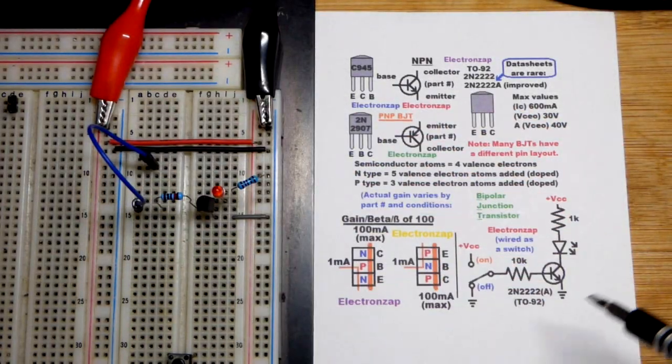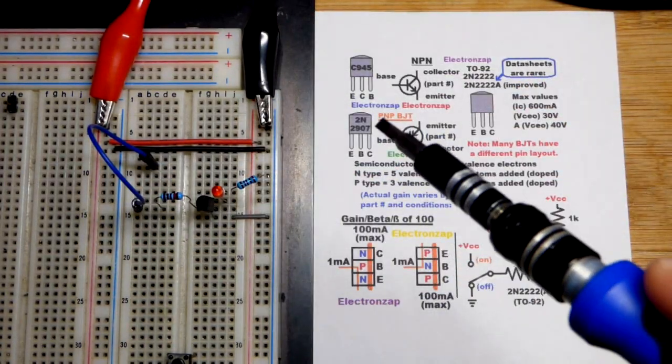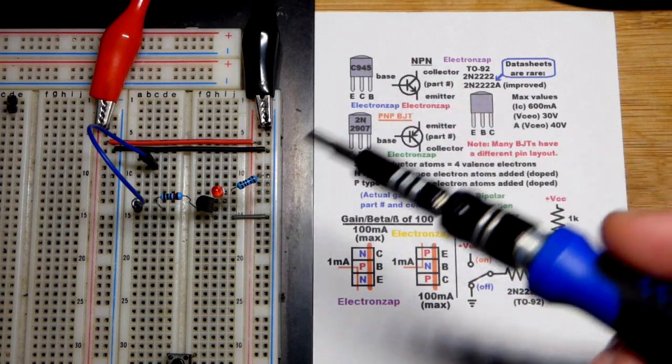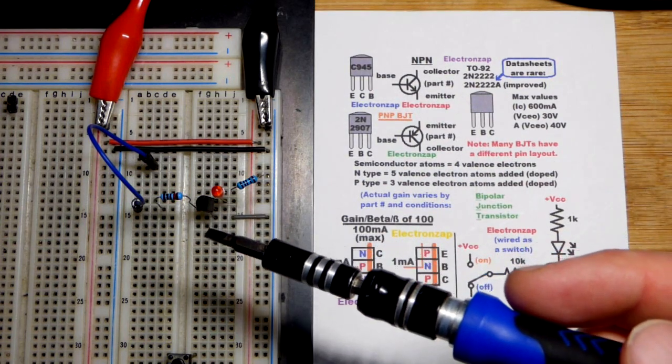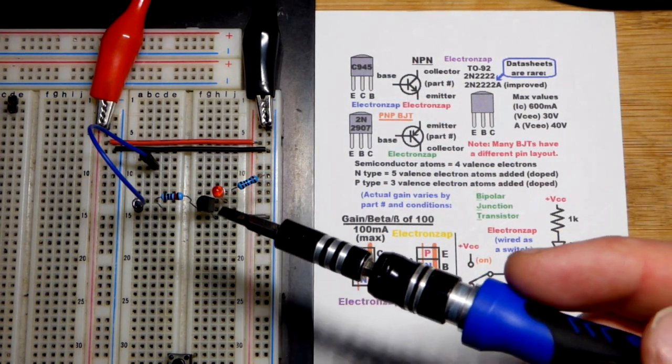In this video, we're going to introduce the bipolar junction transistor, primarily the NPN bipolar junction transistor. PNP works the same way, just opposite direction stuff. We'll get to that later.